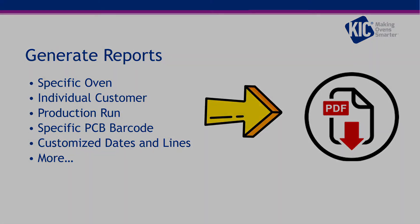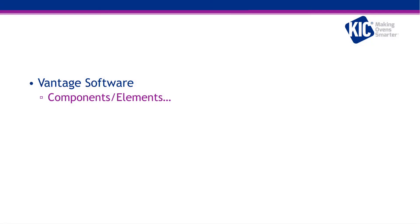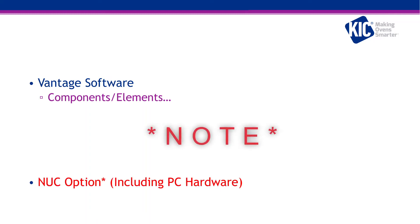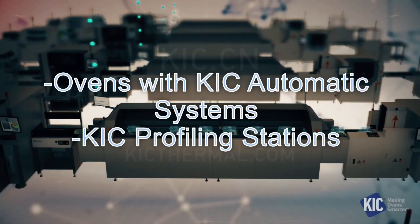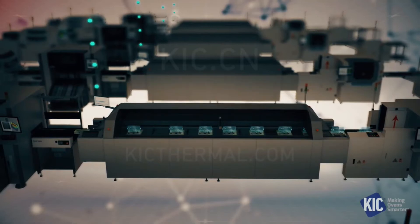The current Vantage system is only available right now as a software option. The components for the final order of the Vantage system will be listed later on in this video. Note: if a customer requires something different or a more complete solution, the Vantage Nook option could be considered. It's important to confirm the number of locations the Vantage system will be collecting data from, including the ovens with automatic systems and profiling stations, so we can get the right quote and programmed USB key for the system before shipping it to the customer site.